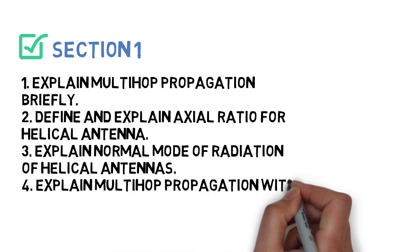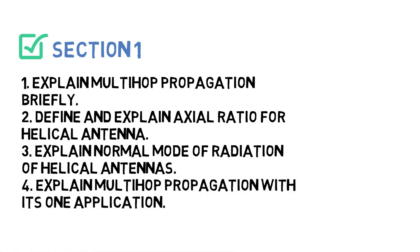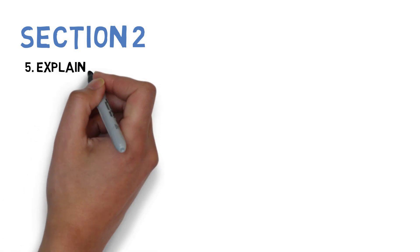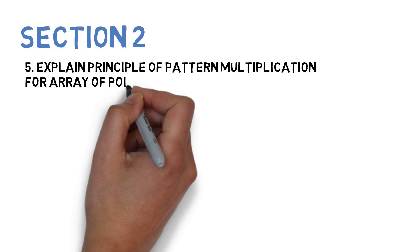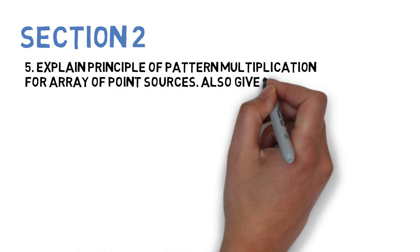Let's go to Section 2, wherein the first is explain principle of pattern multiplication for array of point sources. Also give two examples of short dipoles.